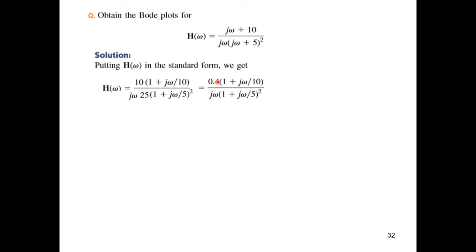And now you can see that there are four elements: one a constant, and then a zero, then a pole at the origin, and that pole at 5. So if you take the log of the constant, it is minus 8 dB.